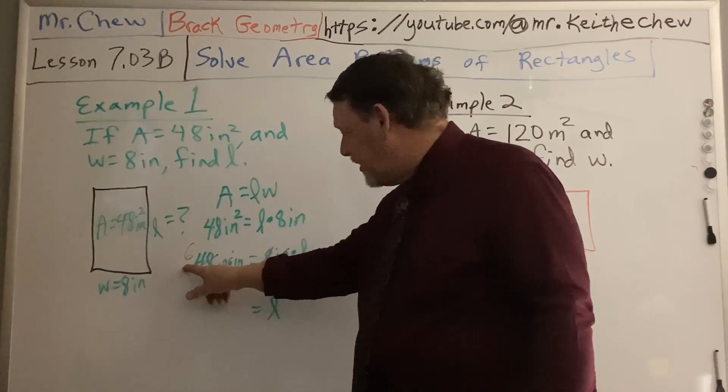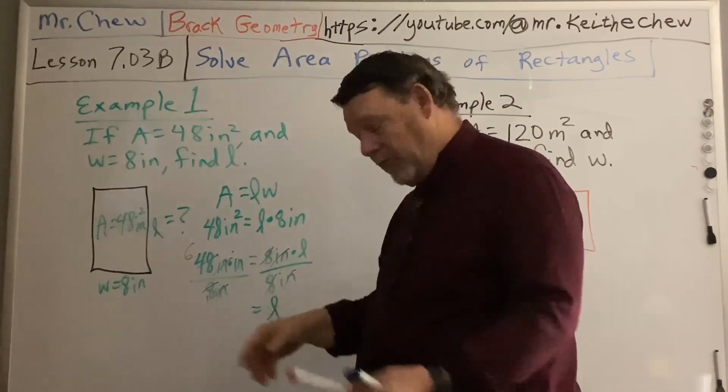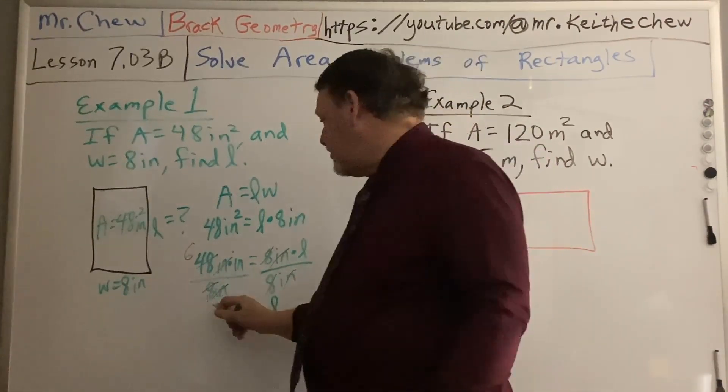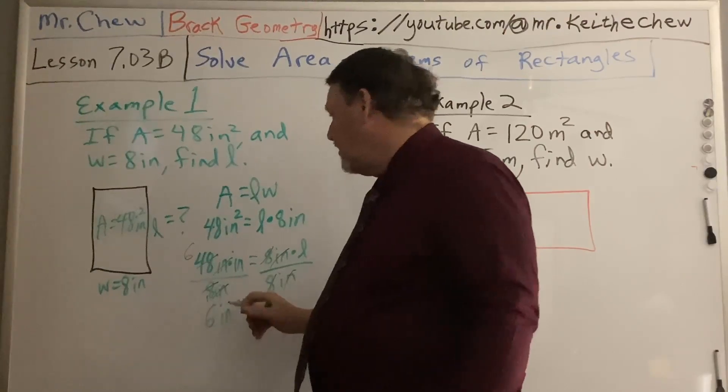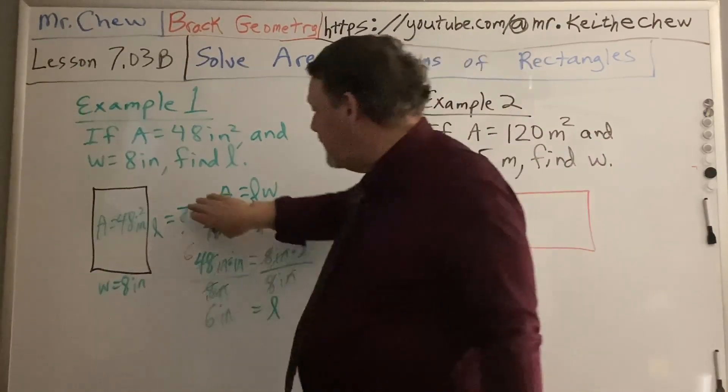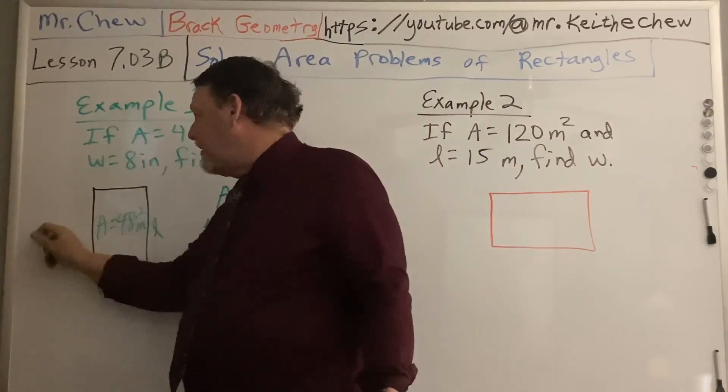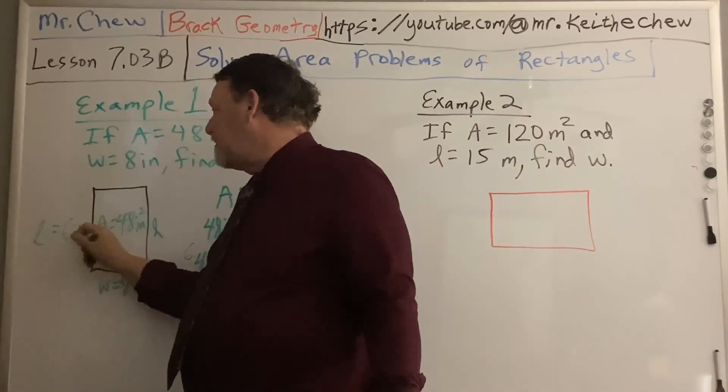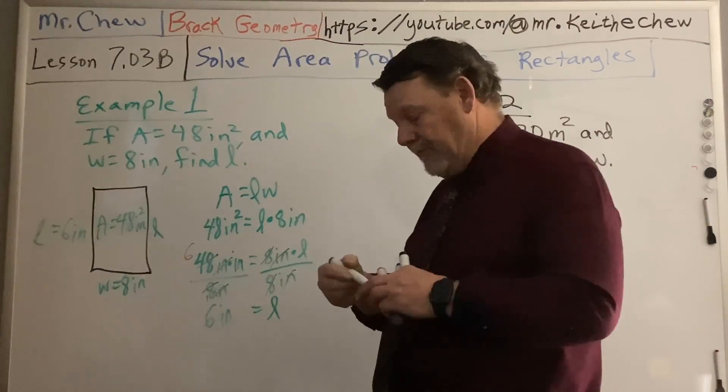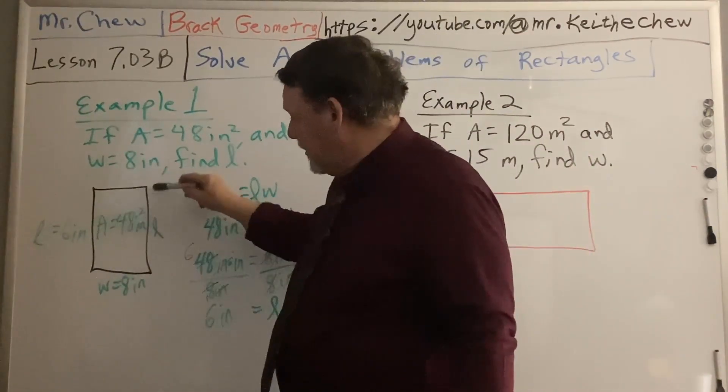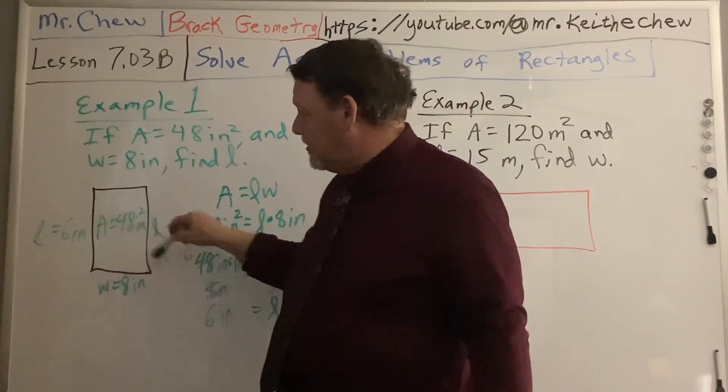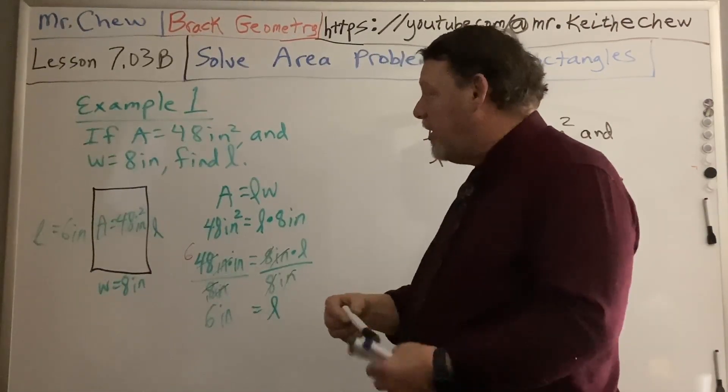And the inches over inches is 1. So what do I have left? 6 inches over 1, which is 6 inches. So I'm saying that that is my dimension. So I'm saying that this length and this length is 6 inches. Because remember rectangles have two sides that are the same length.